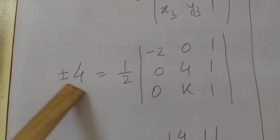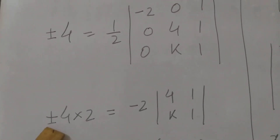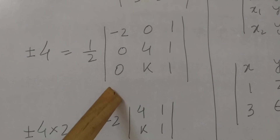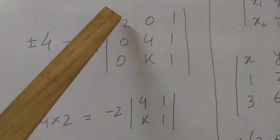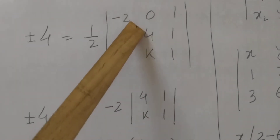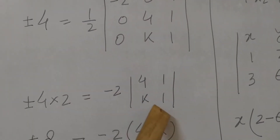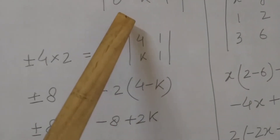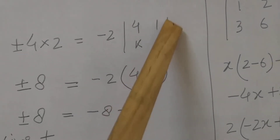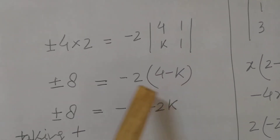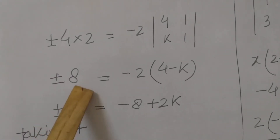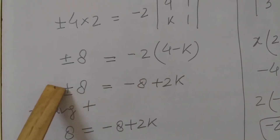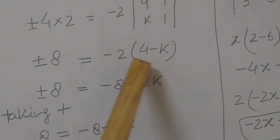After cross multiplication it becomes: ±4 × 2 equals the expansion along C1. For element -2, deleting its row and column leaves the 2×2 determinant with entries 4, k, 1, 1, giving 4k - 1·1. Solving: ±8 equals -2(4 - k), and opening the bracket: ±8 = -8 + 2k.